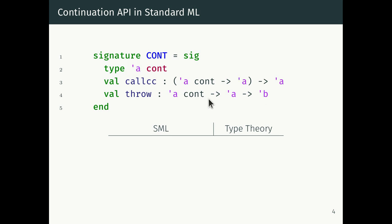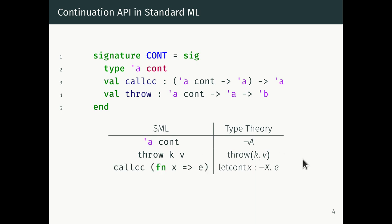The type of call/cc looks a little bit funnier — it has a function type in it. Alpha cont is not-A in type theory, and throw k v in SML is like throw k v in type theory. When we write call/cc (fn x => e), that's exactly like writing let/cc x.e in our type theory. We're using the function fn x => e to simulate this binding expression. Let/cc binds x inside the body of e, and we give it a function in order to get an expression with a free variable, simulating the use of a binding operator in a programming language that doesn't let you extend your language of binding operators.